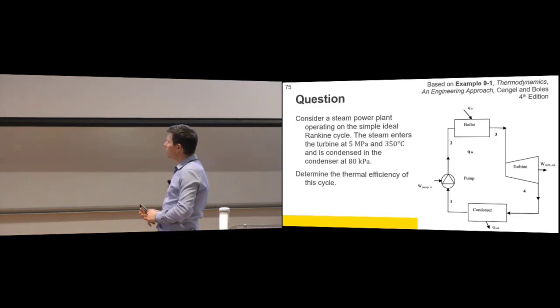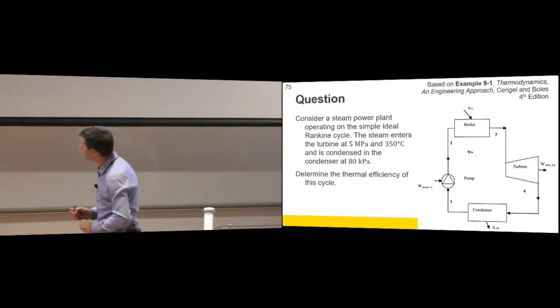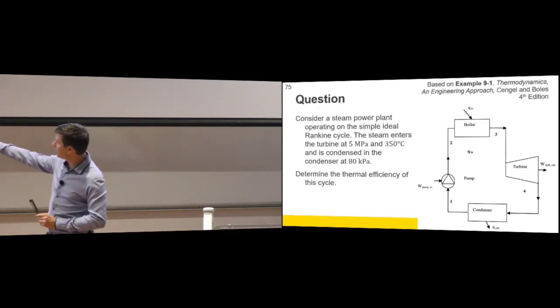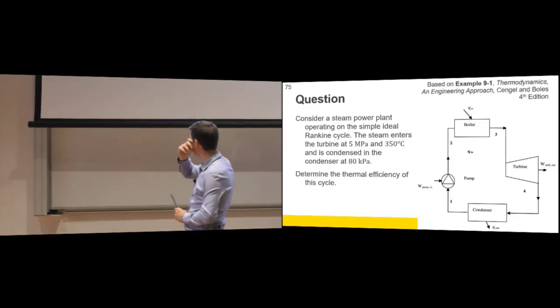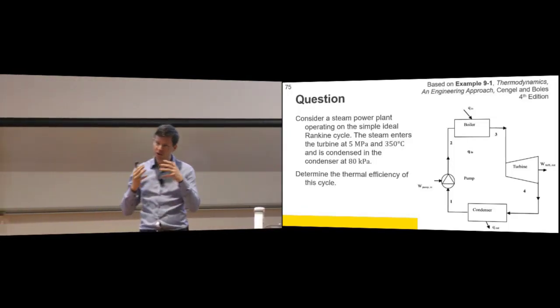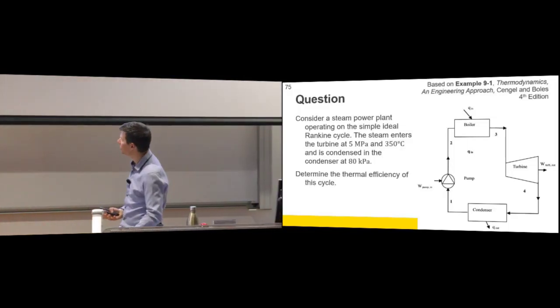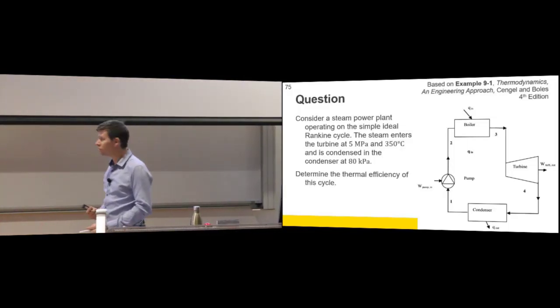This is a very simple question. I think you'll have some of these in your PSS's when we get up to the Rankine cycle PSS. Consider a steam power plant operating on the simple ideal Rankine cycle, so you need to know what simple and ideal assumptions mean. The steam is entering the turbine at a pressure and temperature. It's condensed at another pressure. Determine the thermal efficiency of the cycle. So you're not given lots of data, there's a lot that's coming out of the assumptions that are made.